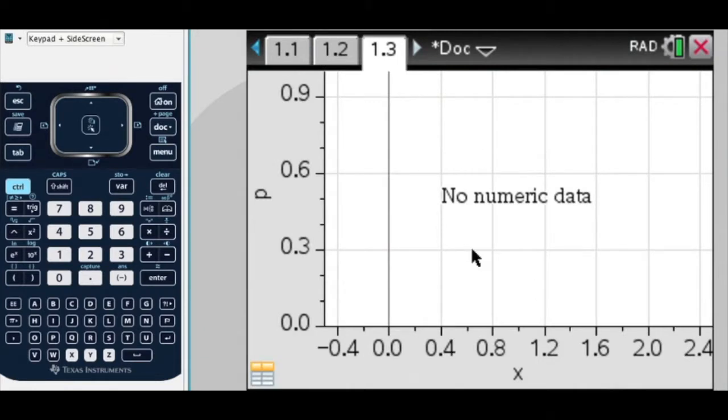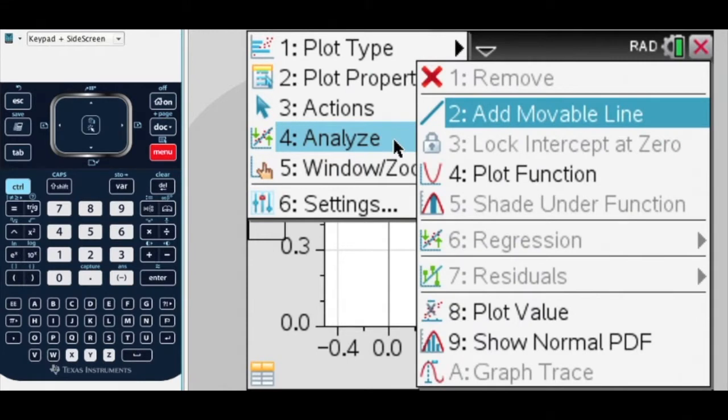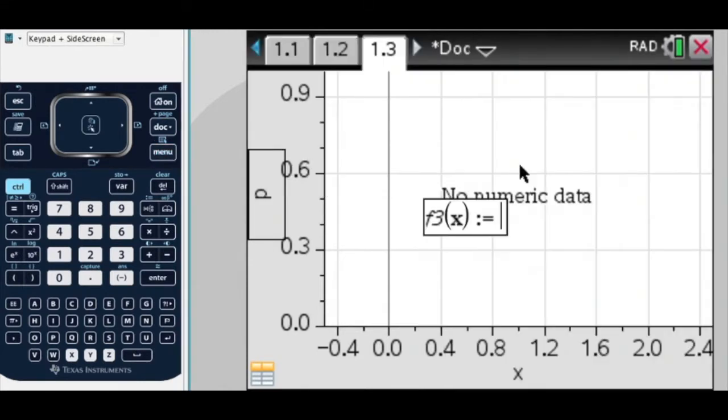Okay, so here's my graph. So, if I press menu, analyze, and I want to plot a function. So here, this comes up, f of x equals what? I'm going to type in norm pdf of, again,